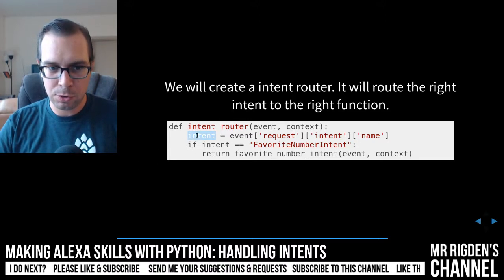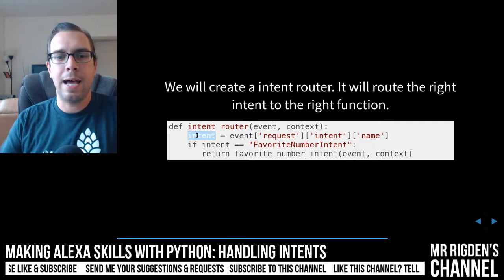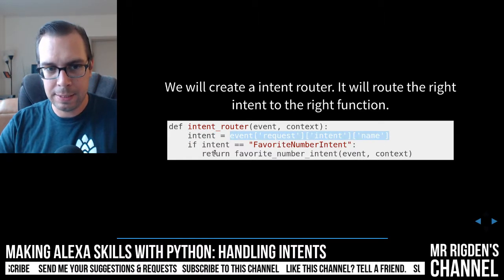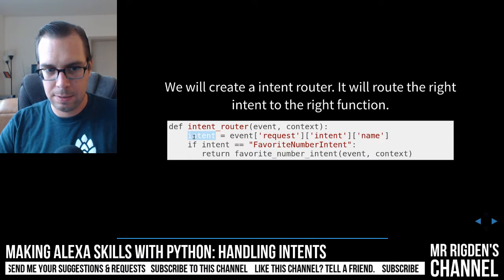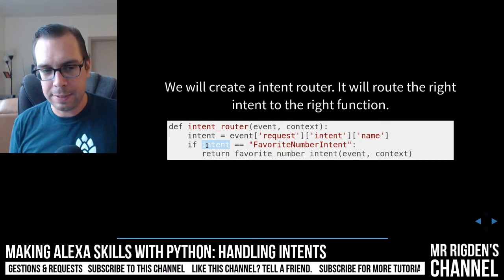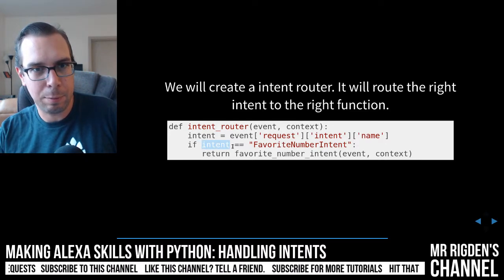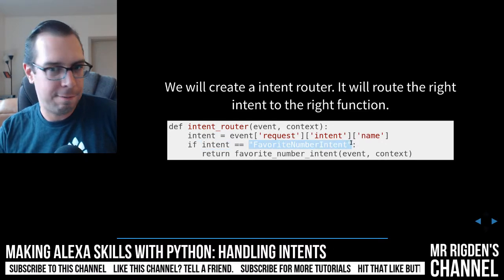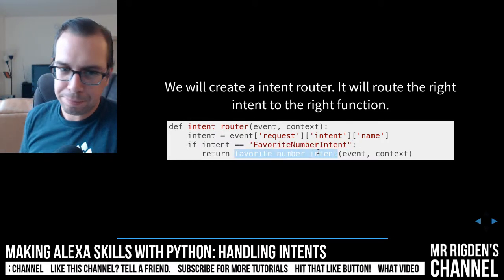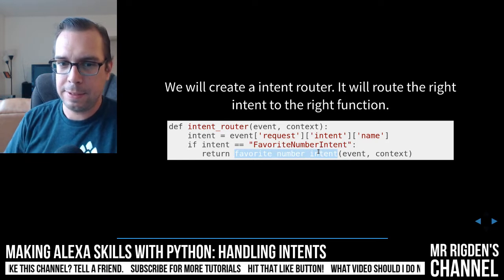So this is going to be a string. We know we've gotten an intent request, and now what we're going to do is assign this long nested dictionary to the intent variable. This is going to hold a string, and then we're going to compare this intent variable and say: if that intent variable string is equal to 'favorite number intent', then we're going to call the favorite number intent function. Does that make sense? I hope it makes sense.